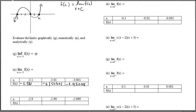On the other side, approaching from the right: at x = -2.9 we're above the x-axis, so we get a positive y-value of 1.421. At x = -2.99, we're even closer — still positive but getting closer and closer to 0. The progression of these outputs shows that the values from the positive side are also going into 0, so numerically the data supports that the limit is 0.